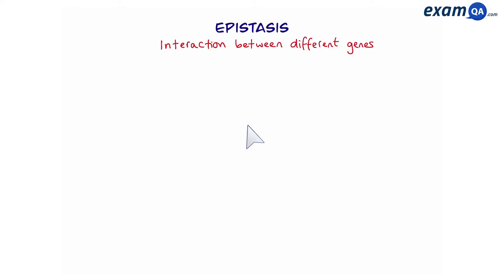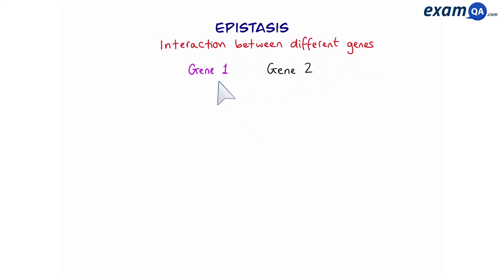Welcome. In this video we're going to be talking about epistasis. This is a form of interaction between different genes. Let's say we have two genes — one gene is going to cover or mask the effect of another.